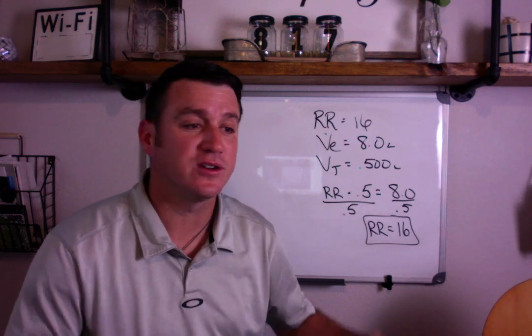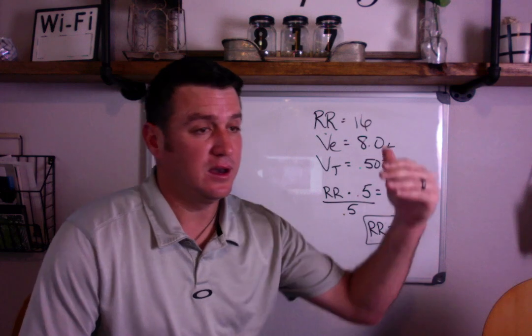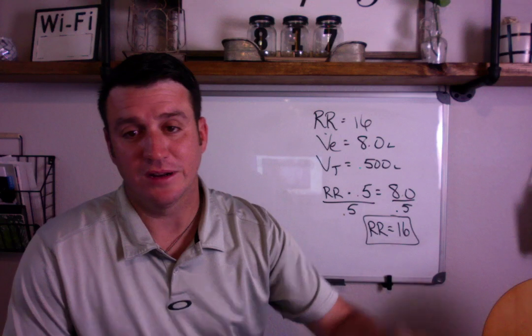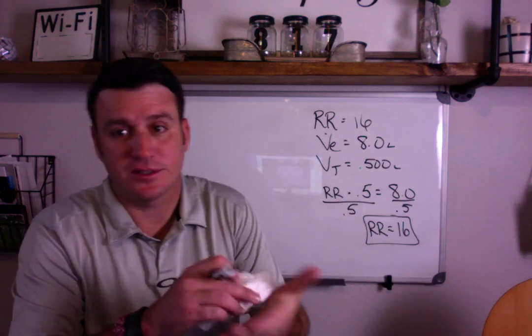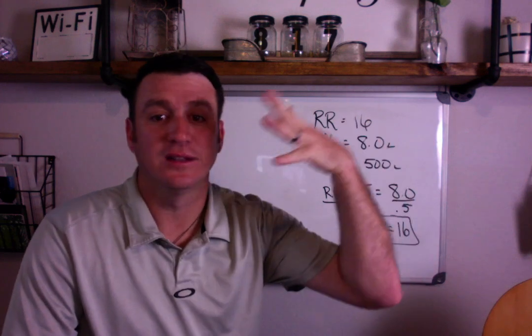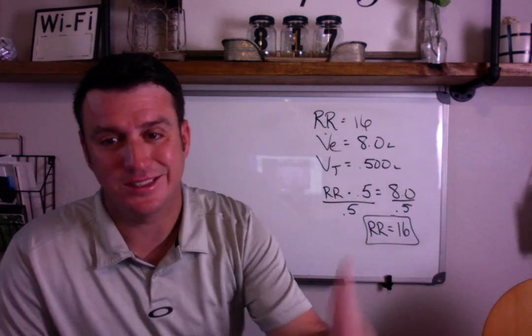What's some patients on a rate of 20, and they have a tidal volume of 500? What's their minute ventilation? You pull a calculator out. 10. You're exactly right, because 20 times 0.5, or 20 divided by 2 equals 10.